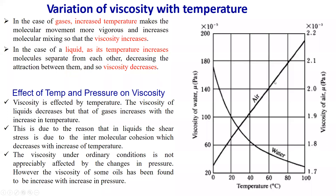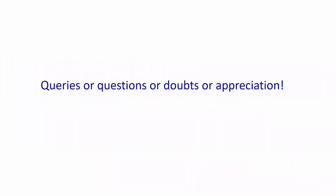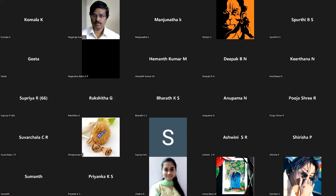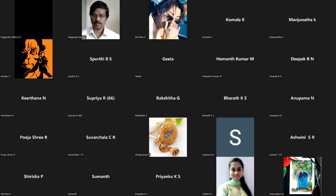The viscosity of liquids decreases with increasing temperature while that of gases increases. In liquids, shear stress is due to intermolecular cohesion, which decreases as temperature rises. Under ordinary conditions, viscosity is not appreciably affected by changes in pressure; however, the viscosity of some oils has been found to increase with increasing pressure — this will be covered in the next class.